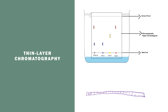What you'll do is spot the plate, which means you put just a little bit of the dye or the mixture onto the plate. Then you sit it upright into your solvent — sometimes water, but it could be another solvent depending on what you're testing. When the plate is in the solvent, the solvent moves up the plate, and the substances attract the solvent and move up with it.